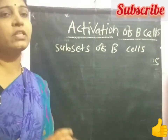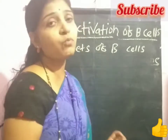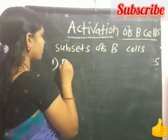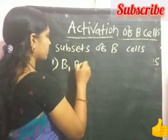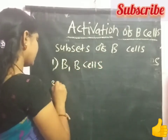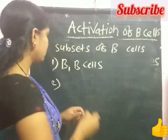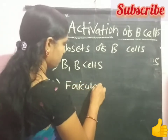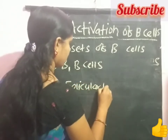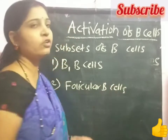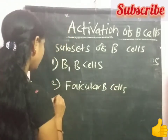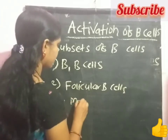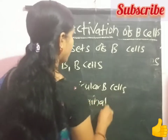Within the circulation, there are three types or three subsets of B lymphocytic cells. The first one is the B1 B cells. The second one is follicular B cells. The third one is the marginal zone B cells, also called marginal B cells.